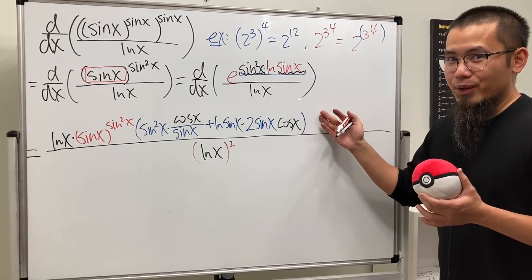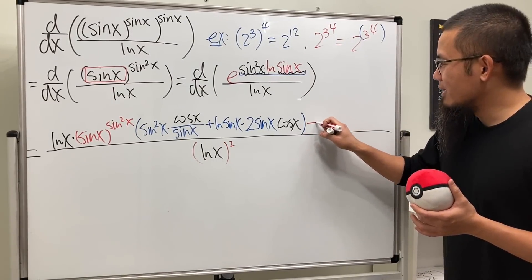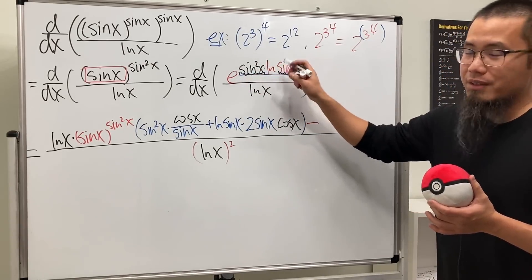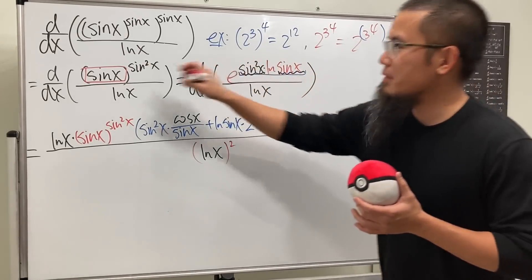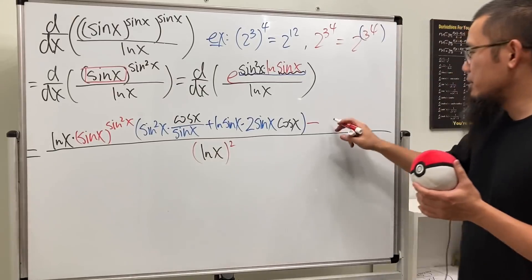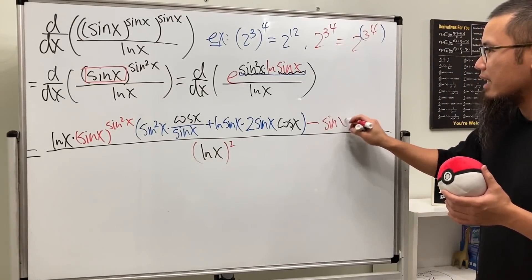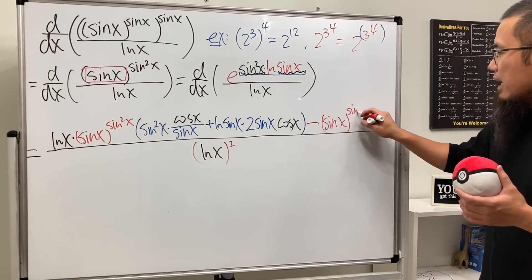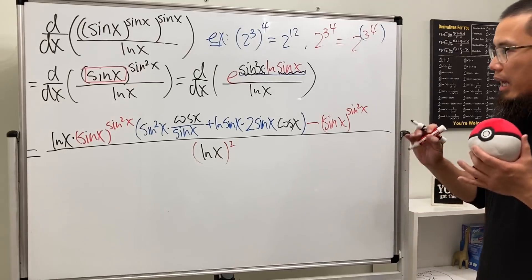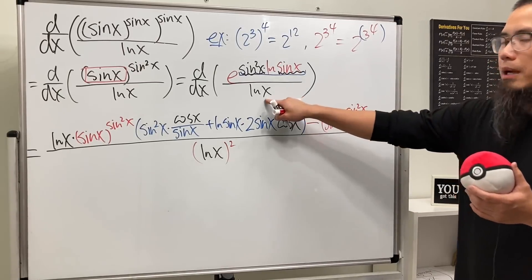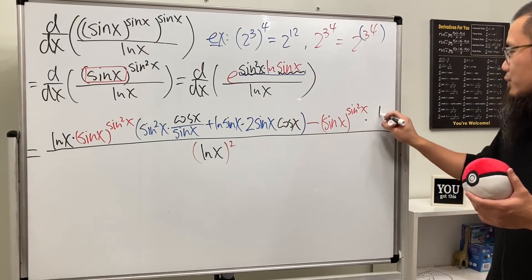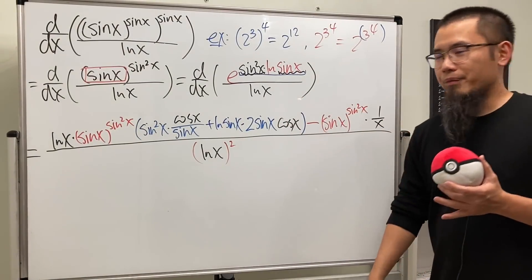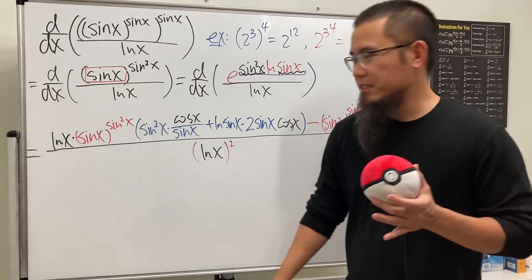For the quotient rule we subtract, so we put minus: the top function, which is sin(x) raised to the sin²(x) power, multiplied by the derivative of the bottom, which is just 1/x. Now let me tell you the good news.